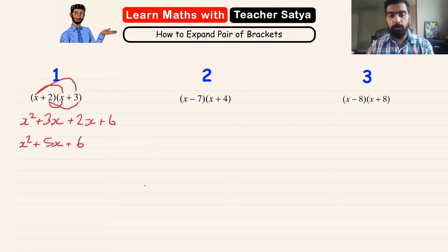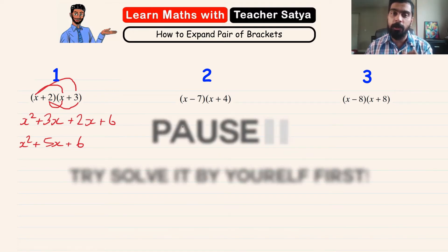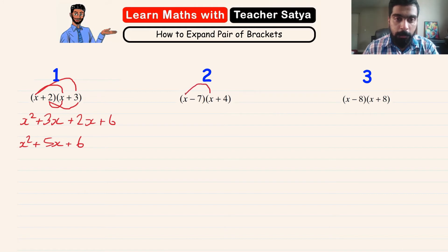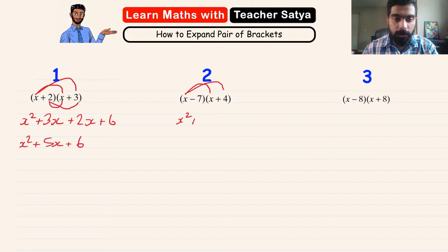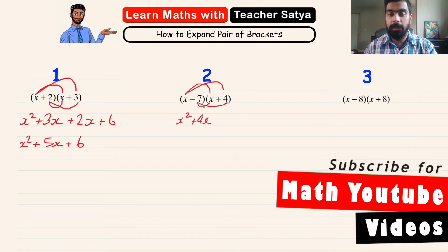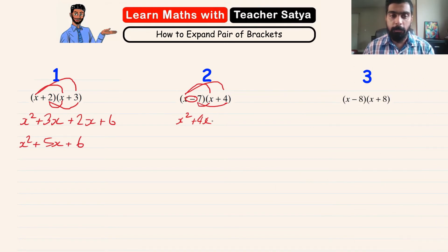For question 2, I'd suggest you click pause, try to solve it yourself, then come back to check. Similar to before, x multiplied by x gives us x squared, and x multiplied by 4 gives us plus 4x. Keep in mind there is a negative in front of 7, so negative 7 multiplied by x gives us negative 7x.